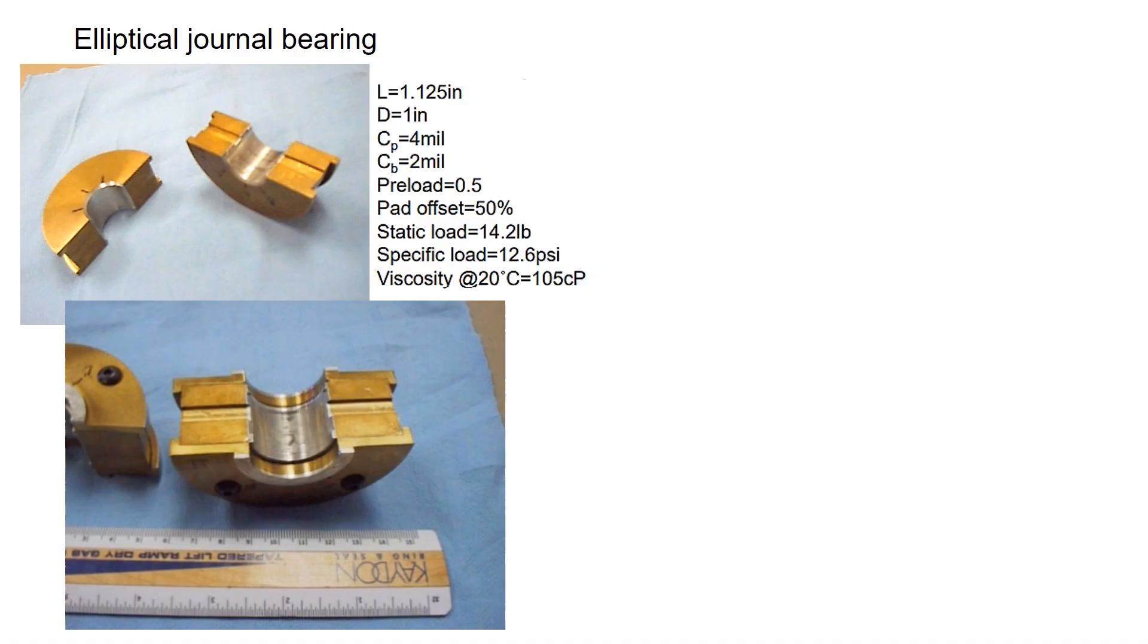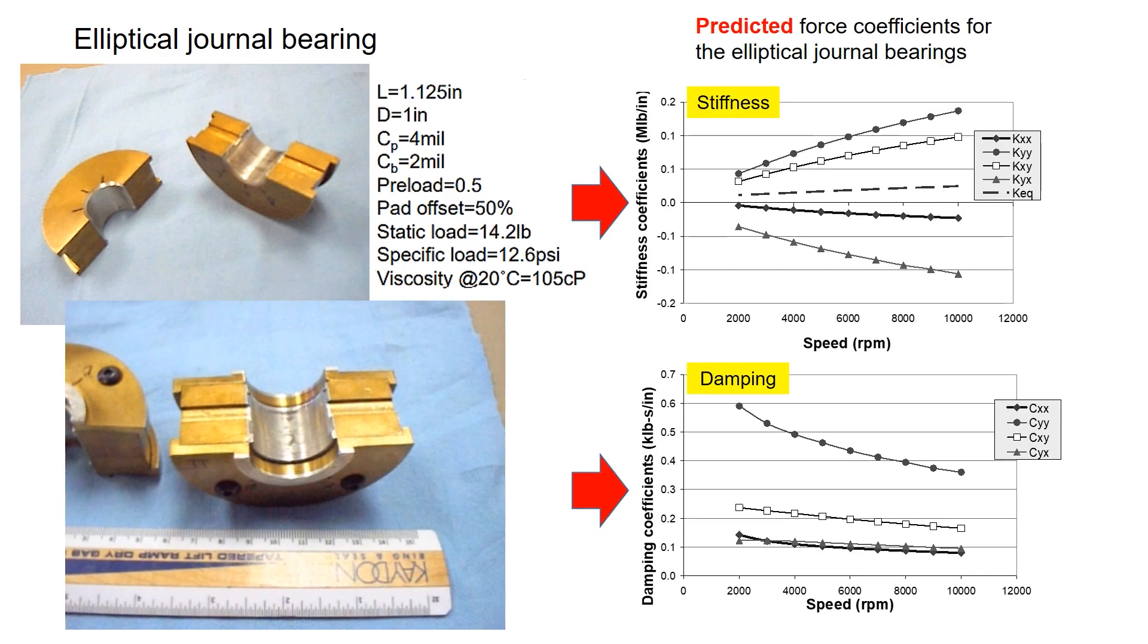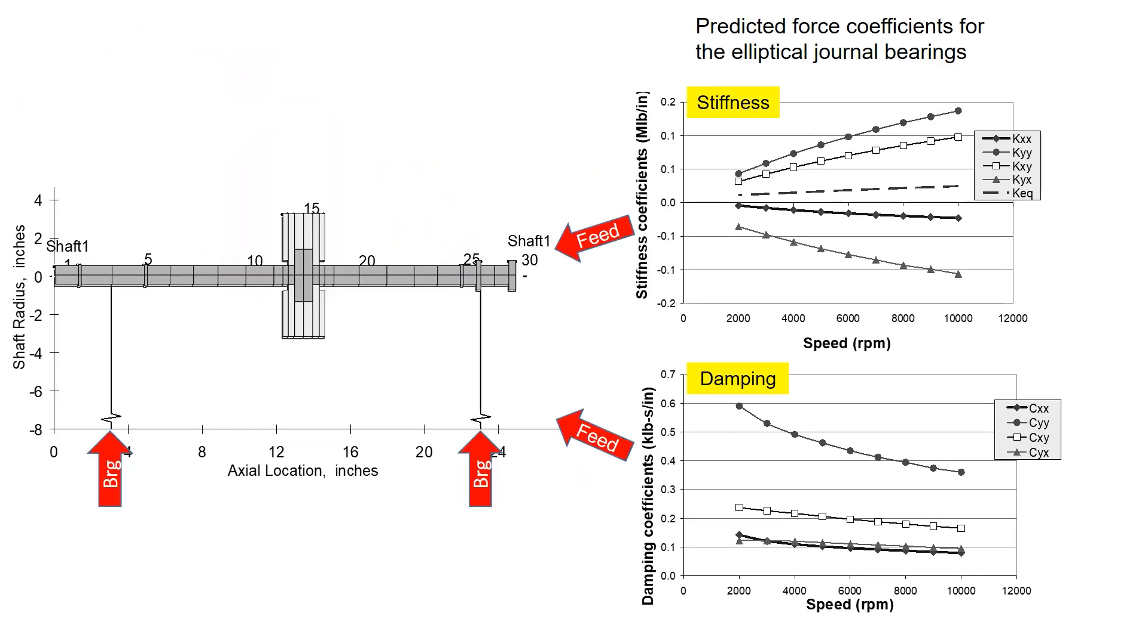You could predict the stiffness and damping characteristics of the bearing using commercial software. Here is the predicted bearing stiffness and damping versus the rotor speed. Then, you feed the bearing stiffness and damping information back into your rotor dynamic model.